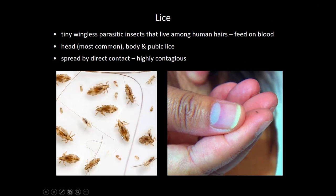An adult louse, a nymph (baby louse), and eggs called nits can be seen for size perspective alongside a hair shaft or on a fingertip. An adult louse is about the size of a sesame seed or often smaller.